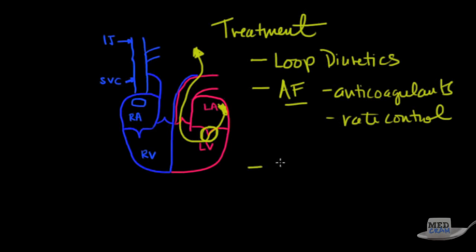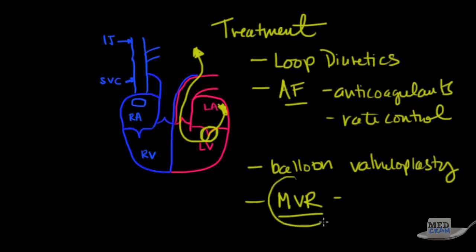If there is regurgitation in addition to stenosis, then you want to go with valve replacement. So you can do balloon valvuloplasty or you can just do what we call a mitral valve replacement.